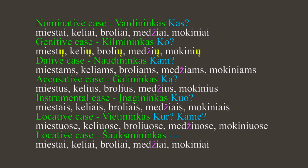The last case without a question word is šauksmininkas — the vocative case, where we address someone. We don't address cities or towns so often, but anyway: miestai, keliai, broliai, medžiai, mokiniai — it's the same as the nominative case. Now I want to give you some examples.